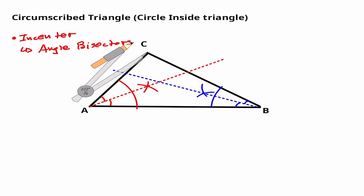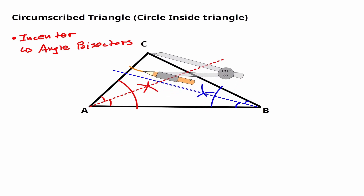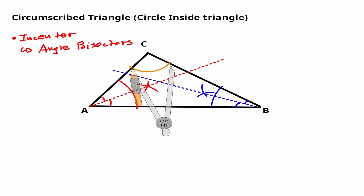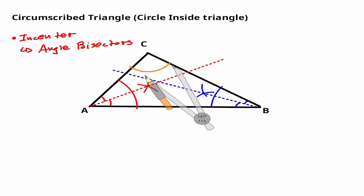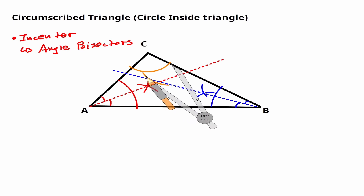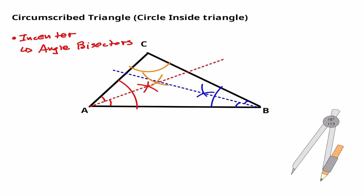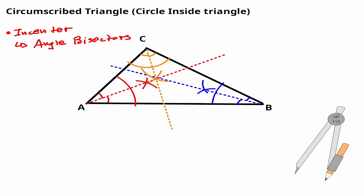Now let's go to angle C — same idea. Let's create an arc, open it. Now let me measure more than half the arc — that's the full length, so let me close it a little bit. That's definitely more than a half. Let me create my mark on the inside, then look for that intersection. There it is. Now, if we connect the vertex to that intersection, this is my angle bisector, and if it's an angle bisector, then I know that this angle is equivalent to this angle.